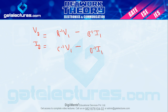यहाँ पर एक important point है: कई बार students confused हो जाते हैं और A inverse को 1 by A लेने लगते हैं। तो आपको बता दूँ, यहाँ पर A inverse, B inverse, C inverse, D inverse just representation है - यह 1 by A या 1 by B नहीं है। A inverse की value आपको calculate करनी होगी, यह सिर्फ एक symbol है। यह आपका inverse transmission parameter होता है।